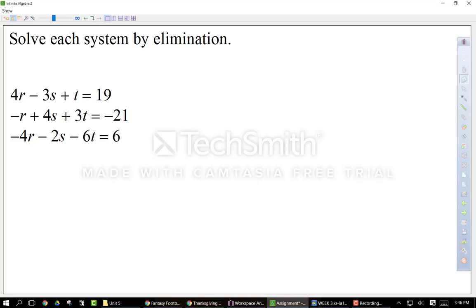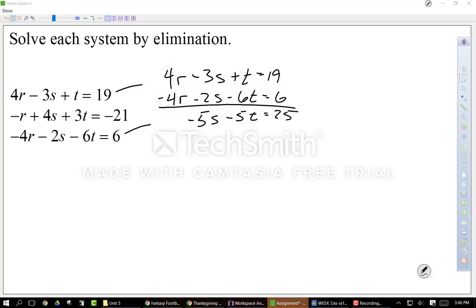This is the last example that we'll do. This is the last special case for three variable systems. So let's look at the top one and the bottom one. I can just add and my R's will cancel. Just makes it easy that way. So when I do that, I get, well let's just write it. Let's go 4R minus 3S plus T equals 19, and negative 4R minus 2S minus 6T equals 6. Let's add them up. That gives me negative 5S minus 5T equals 25, a lot of 5's.